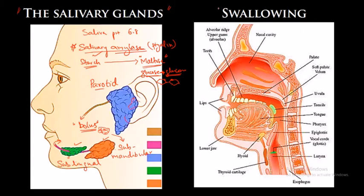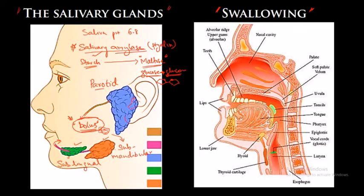Next we will look at the process of swallowing food. The food is consumed and after chewing or masticating, the food is converted into what we call the bolus — a mass of food that will enter into the esophagus, or food pipe. The salivary glands secrete saliva containing salivary amylase, which converts starch to maltose. This process of swallowing involves two to three stages.